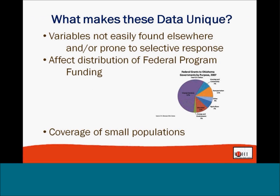What makes these data unique? These variables are not easily found elsewhere, and when they are found elsewhere they may be more prone to selective response or a less population-based sample. Also, federal assistance programs use a variety of formulas to determine funding, so census data can be the basis for getting a piece of the federal funding pie. The populations we represent tend to be small and are often captured only in a racial category called 'other' in large datasets — census data addresses this.